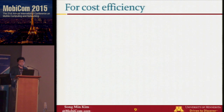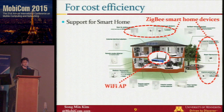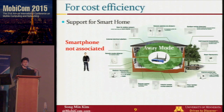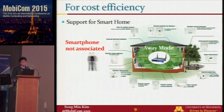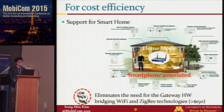Another use case of Freebie is cost efficiency in smart homes. Suppose there is a smart home equipped with ZigBee smart home devices and a WiFi AP. When the owner is outside, his smartphone is not associated to the WiFi AP. This information can be directly broadcast from the WiFi AP to ZigBee nodes, enabling smart devices to operate in away mode — such as lowering the temperature. As soon as he comes home, his smartphone associates and this information broadcasts to turn them into home mode, eliminating the need for a gateway.